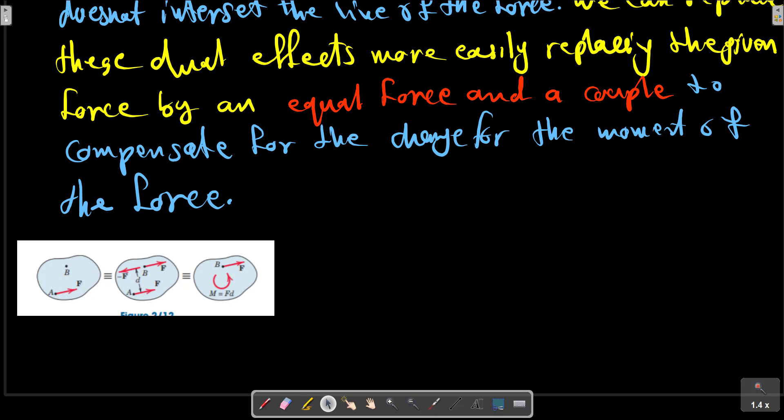Here we see where the given force F at first acting at point A is replaced by an equal force F at point B. For this addition we should add a minus F here, and these two forces making F and minus F